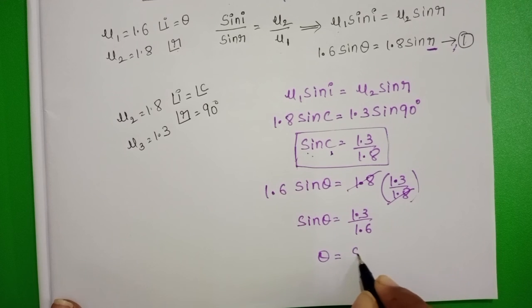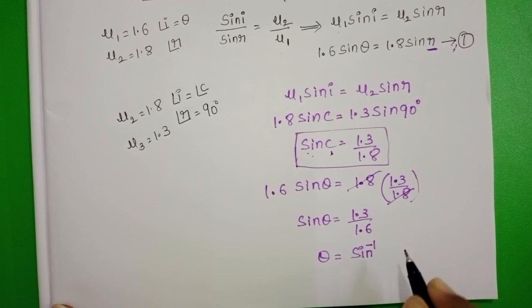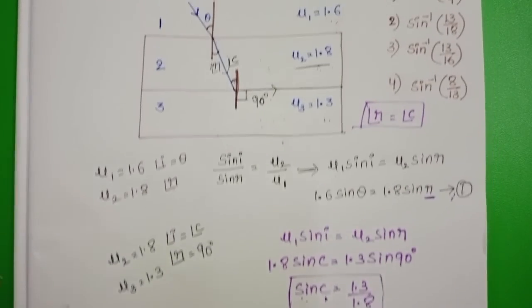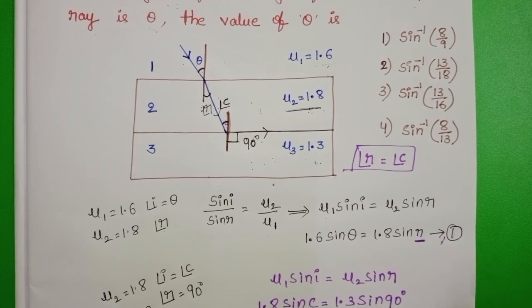So theta equals sin inverse 13 by 16. Angle of incidence equals sin inverse 13 by 16. Third option is correct.